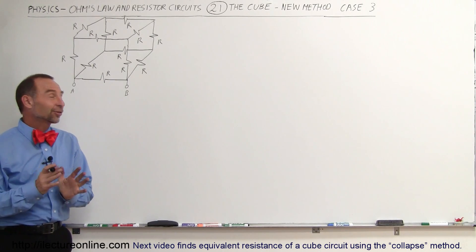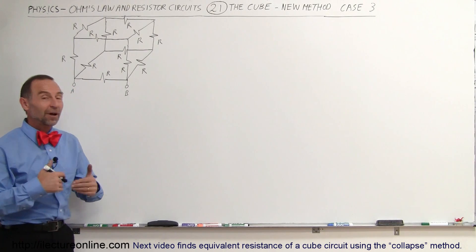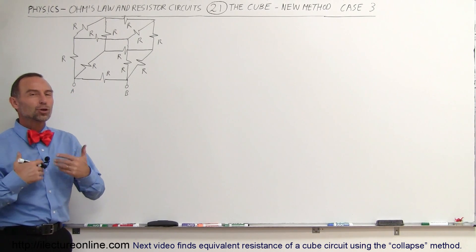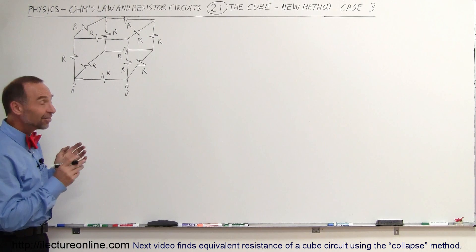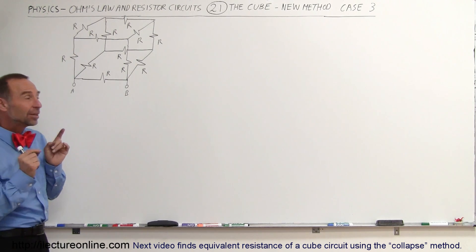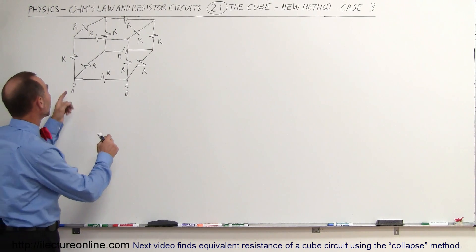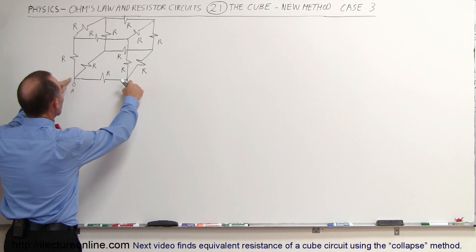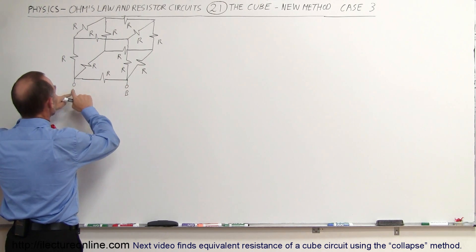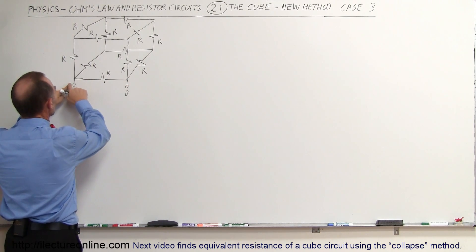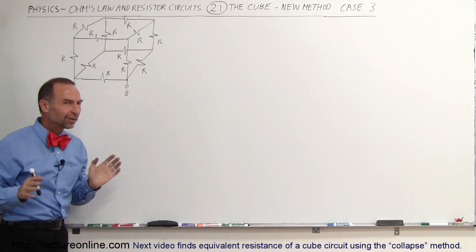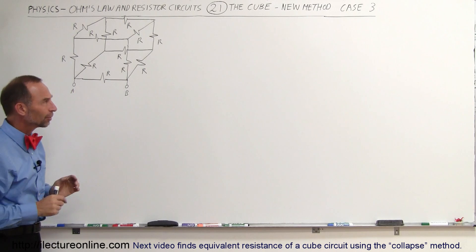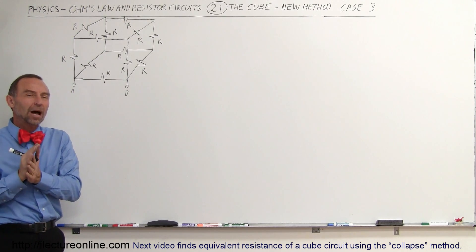Welcome to ElectronLine. Here's our third example of how to solve a cube resistor problem. In this case, we have the endpoints on the same face at the bottom of the cube. We want to know the equivalent resistance between A and B. It's a different circuit but the technique will be the same.